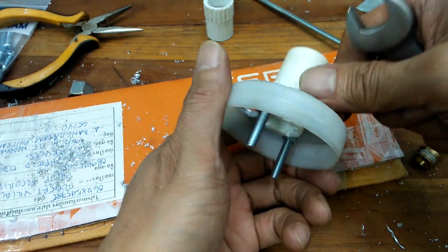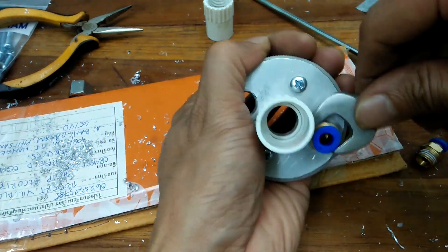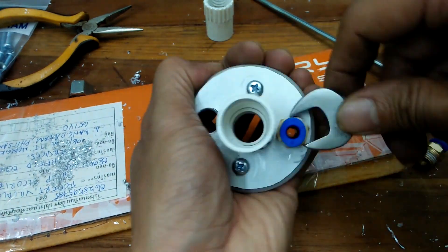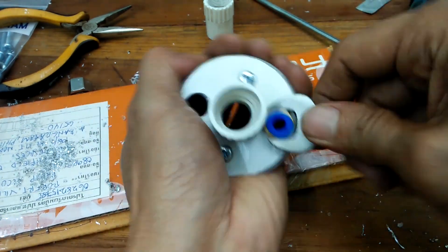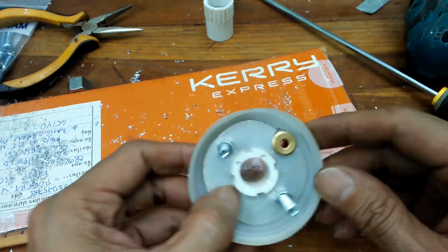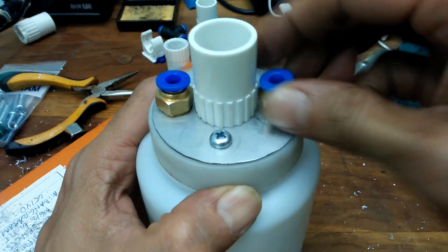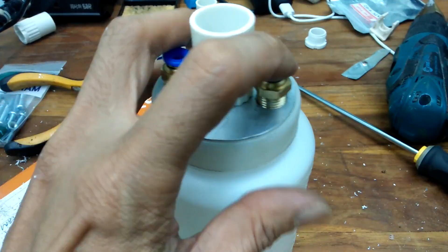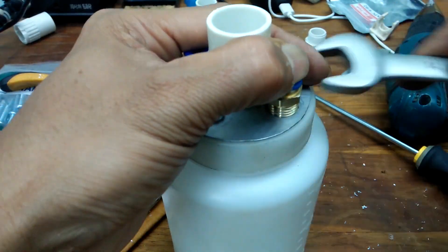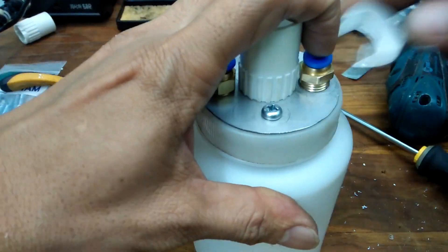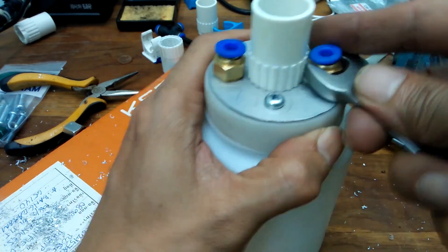I then used two of these threaded push-in fittings. I drilled the holes to just the right size that the fittings tightly thread into the soft aluminum.